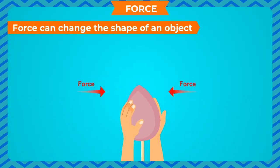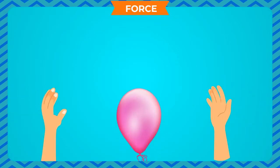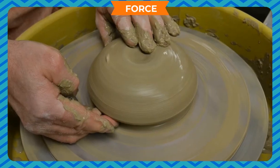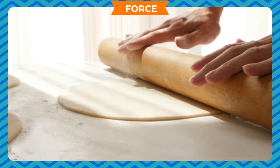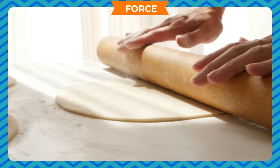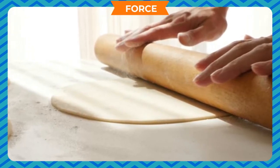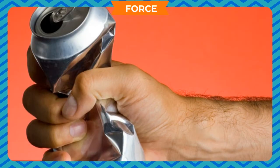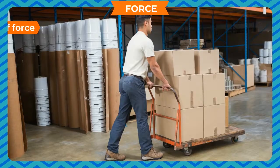Force can change the shape of an object. If an inflated balloon is pressed between the palms, clay is rolled between palms, or floor dough is rolled with a rolling pin, we see that all these objects change their shape. Thus, force has the capacity to change the shape of an object.